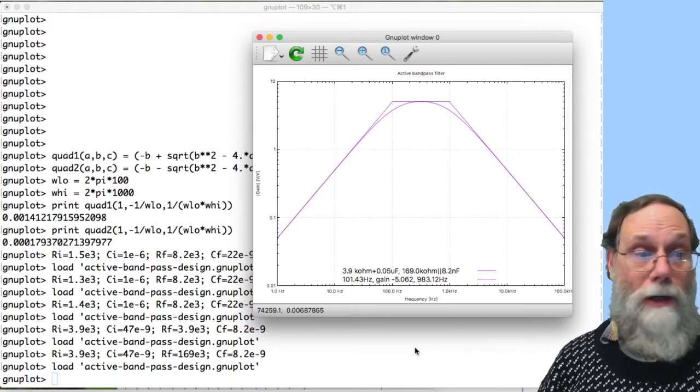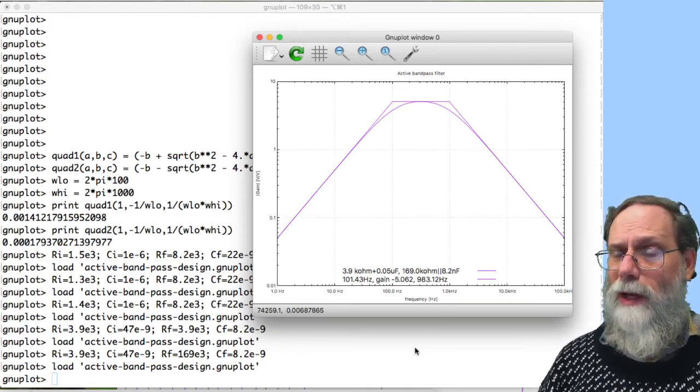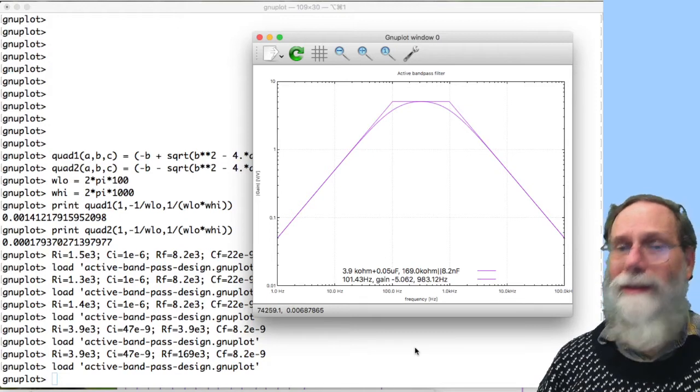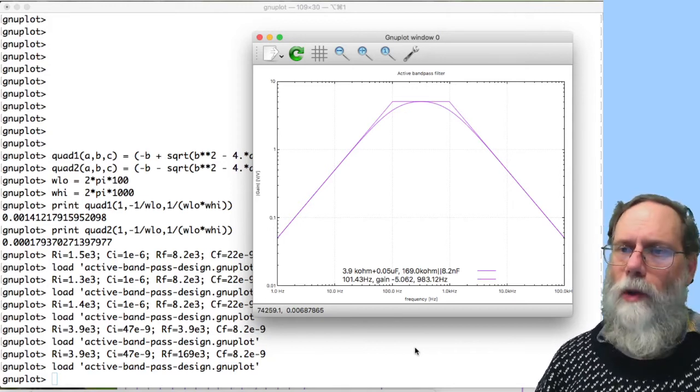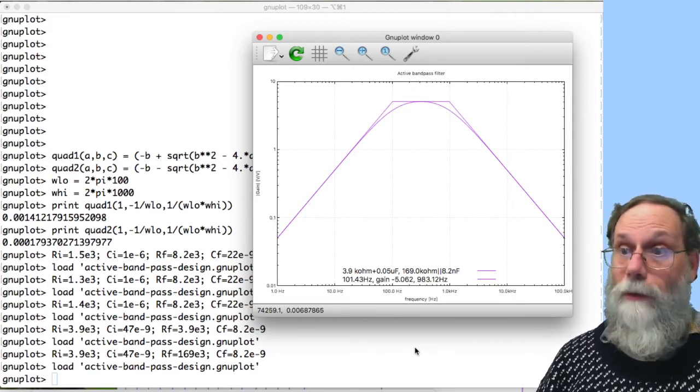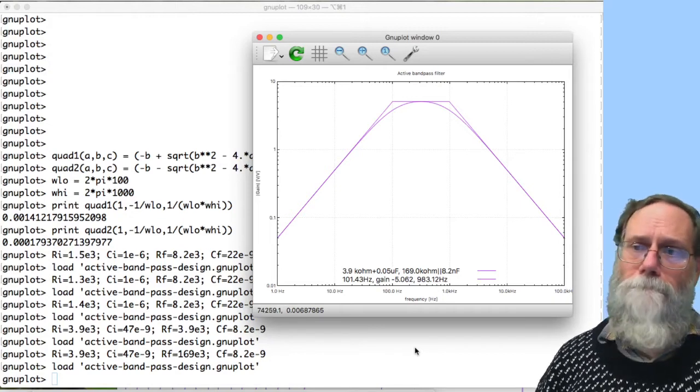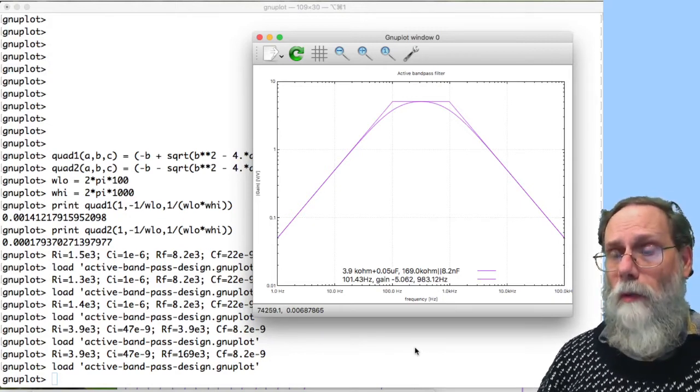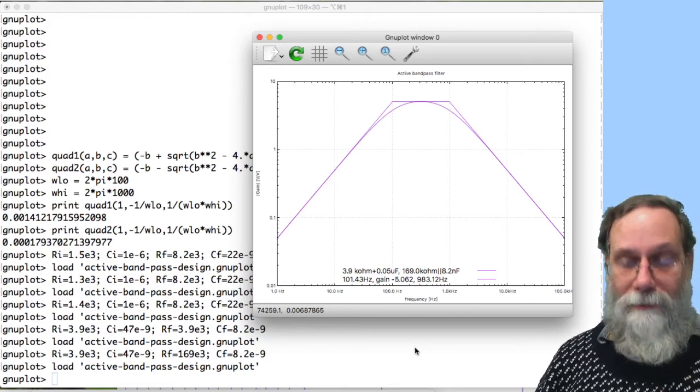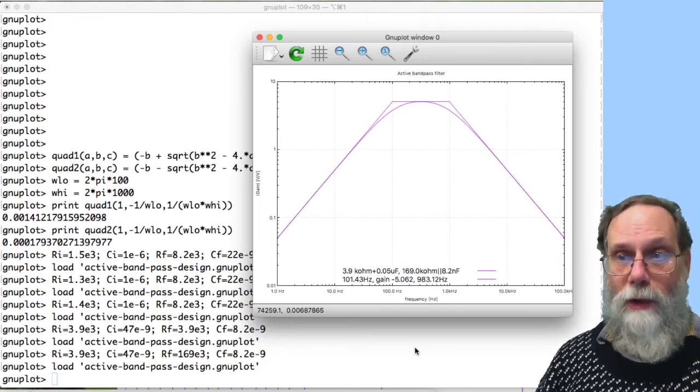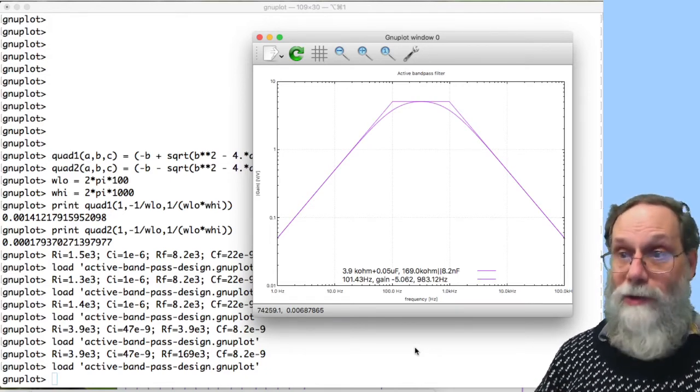101 hertz for the lower corner frequency, gain of minus 5.06, that's a pretty good gain. Upper corner frequency, 983.1 hertz, again pretty close to 1 kilohertz. This is looking very much like the sort of filter we want, and notice that there's nothing there that was bigger than the 47 nanofarads. And this is basically what you do to go about designing a filter like this. You solve for the time constants, pick an arbitrary value for some component that looks reasonable, propagate that value through the other components, and then check to make sure that you haven't made any mistakes in doing that.